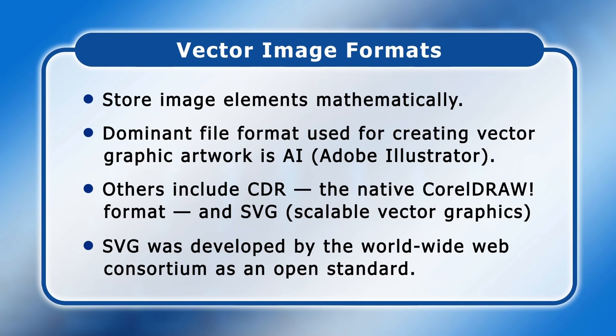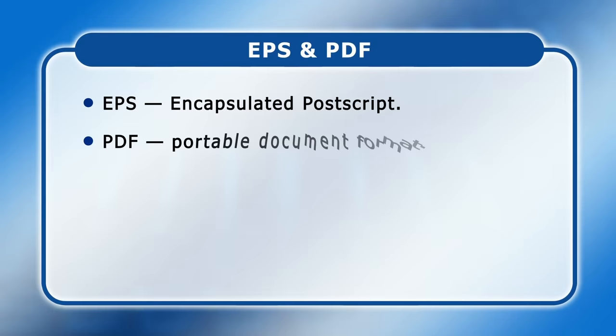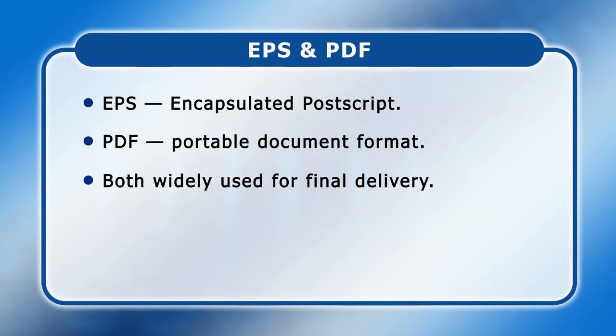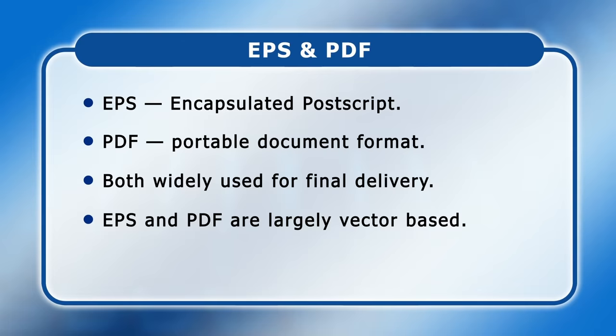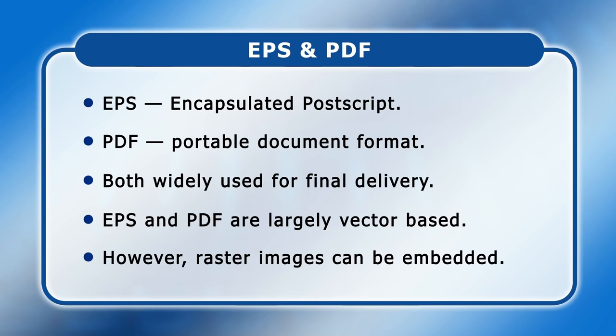SVG enjoys widespread software support, including being readable in all modern browsers. Two other notable formats are EPS, which stands for Encapsulated PostScript, and PDF, or the Portable Document Format. Both are very widely used for the delivery of final artwork or typeset documents and are both largely vector-based. However, it's possible to embed raster images within EPS or PDF files, allowing for a mix of resolution-independent text and graphics alongside photographs, scans or bitmap illustrations.